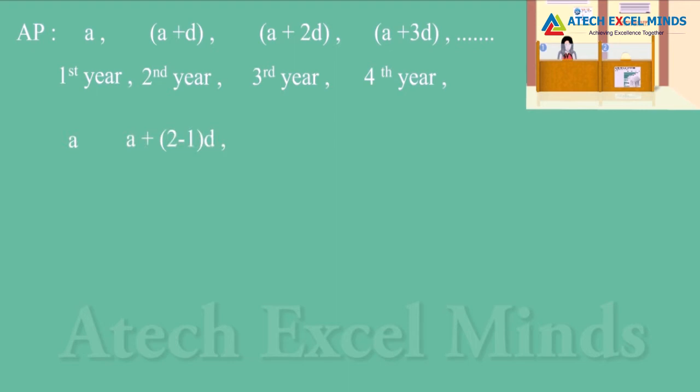The term for second year, A plus D, can be written as A plus (2 minus 1) into D. Similarly, third year, A plus 2D can be written as A plus (3 minus 1) into D.